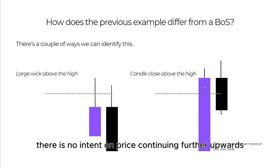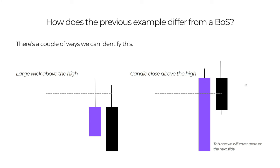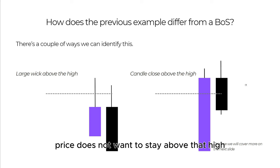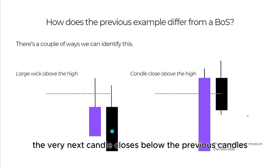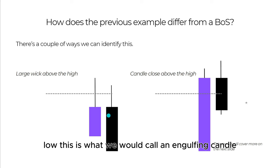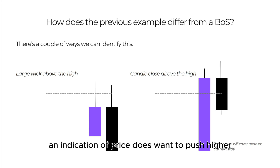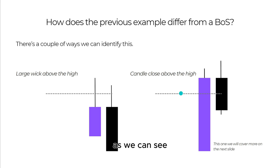As the candles are not closing above this high, this shows there is no intent for price to continue further upwards. These wicks are showing that price does not want to stay above that high for a long period of time. In turn, we can see the very next candle closes below the previous candle's low — this is what we're calling an engulfing candle.